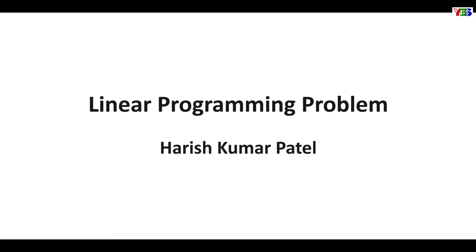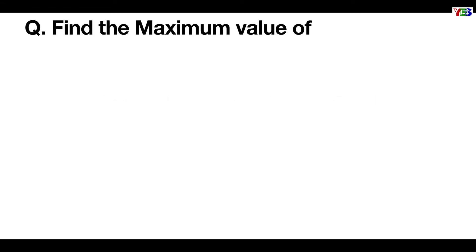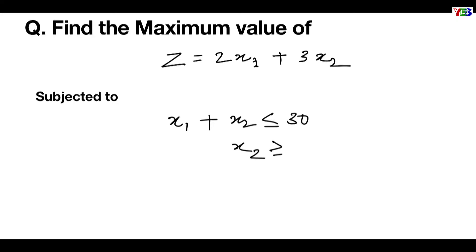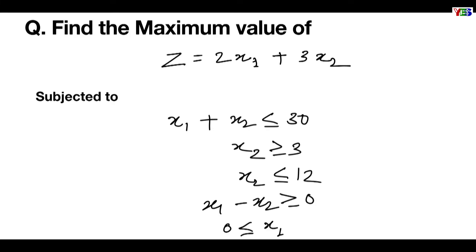We have here a linear programming problem. The question is: find the maximum value of z equal to 2x1 plus 3x2, subjected to x1 plus x2 less than or equal to 30, x2 greater than or equal to 3, x2 less than or equal to 12, x1 minus x2 greater than or equal to 0, and x1 greater than or equal to 0 and less than or equal to 20.